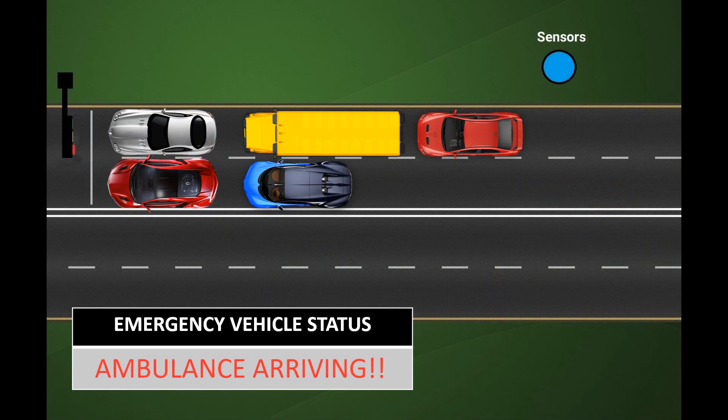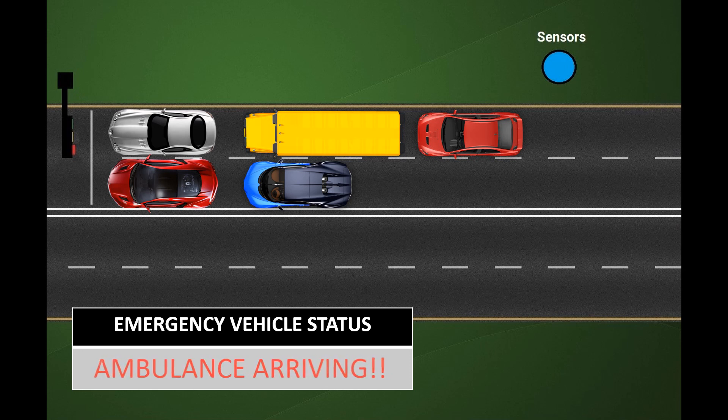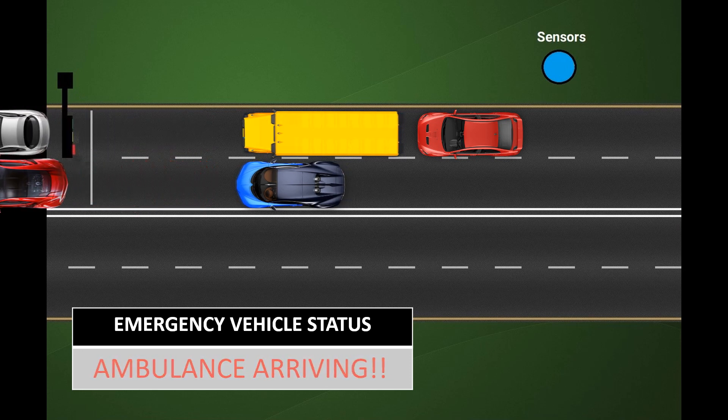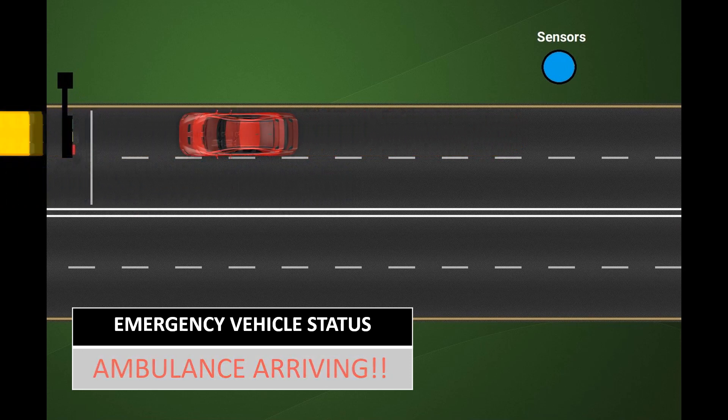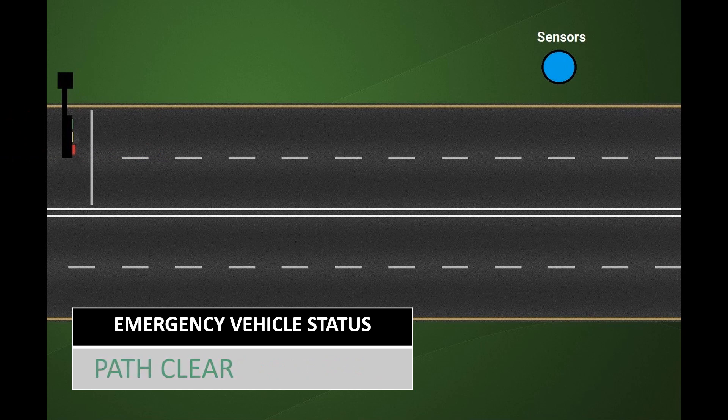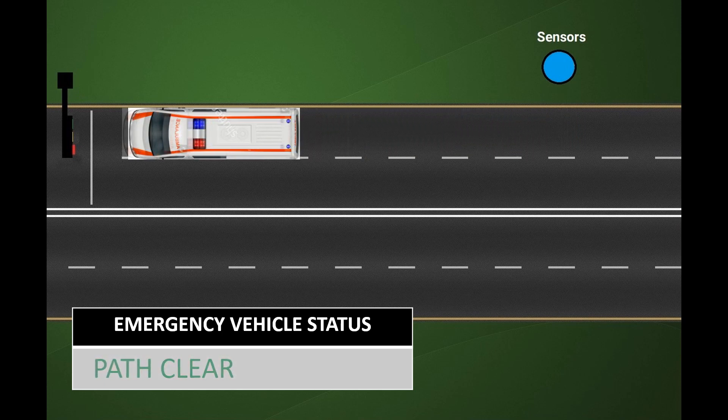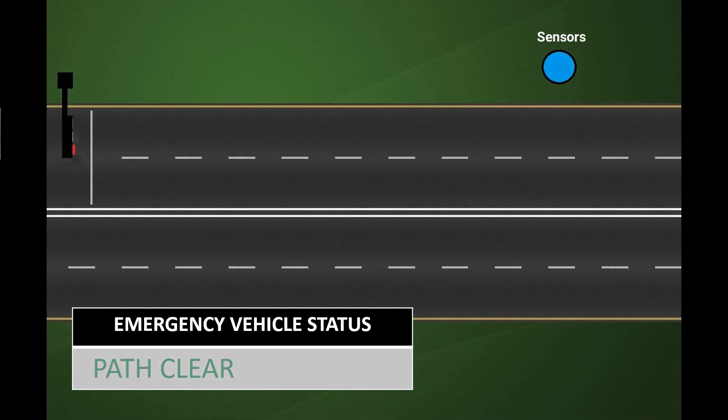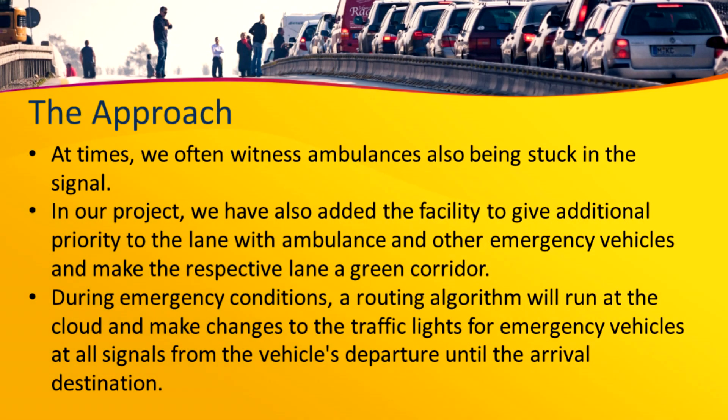We have also added a facility to give additional priority to lanes with ambulance on service and other emergency vehicles and make the respective lanes as a green corridor for hassle-free movement. A routing algorithm will run at our cloud and make changes to traffic lights for every emergency vehicle at all signals between the vehicle's current location and destination.